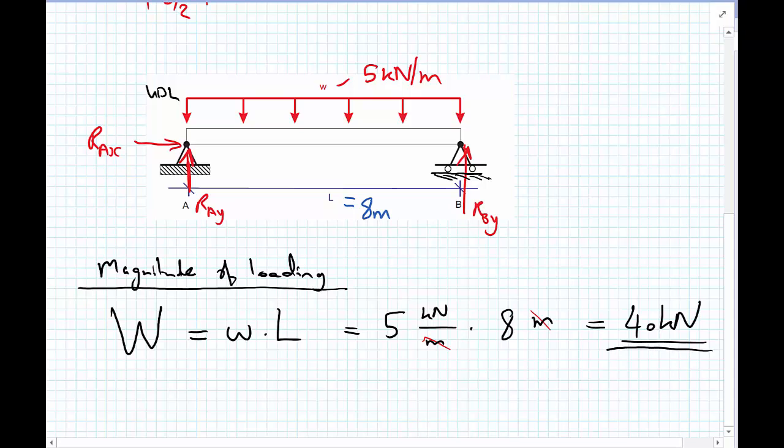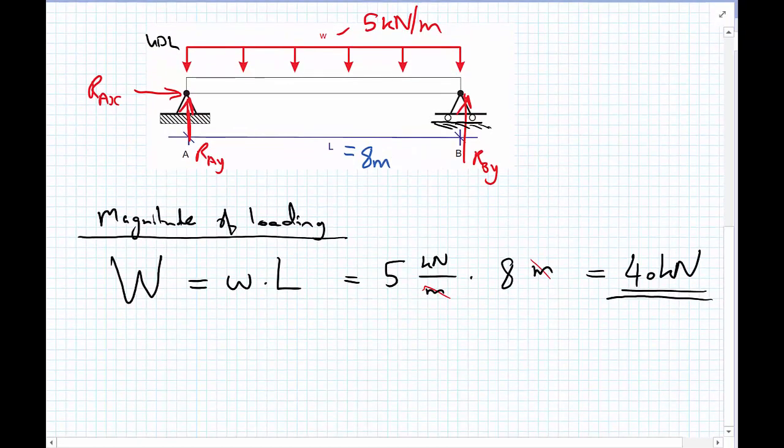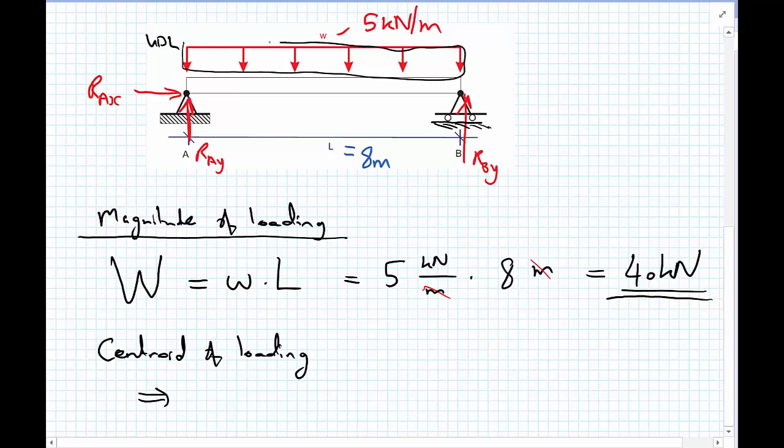Now, we're going to use the knowledge that we have of where this load would act. And so, we use the centroid of the loading to help us determine this. And the centroid of the loading, because we have a uniform load distribution, this is what we could consider to be rectangular. So, uniform, and therefore, our x-bar would be equal to L upon 2, which equals 4 meters.